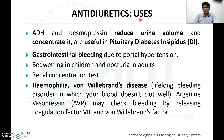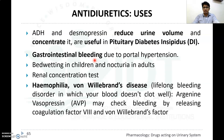Uses of ADH or vasopressin: both ADH and desmopressin reduce urine volume and concentrate urine, especially useful in pituitary diabetic insipidus. They are also used for gastrointestinal bleeding due to portal hypertension, bed-wetting in children, nocturia in adults, and renal concentration tests. For hemophilia and von Willebrand disease, arginine vasopressin can release coagulation factor VIII and von Willebrand factor.